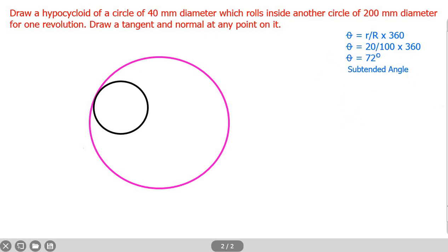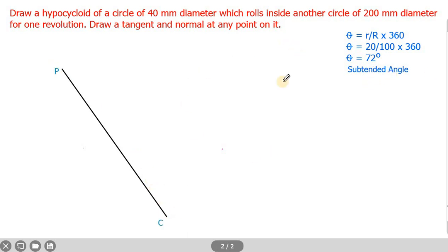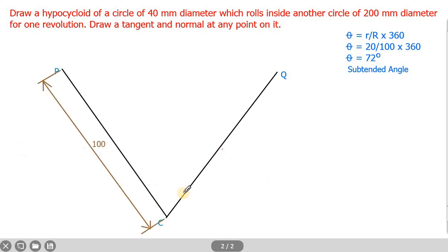To start the diagram, first draw a slanting line of capital R, that is 100 mm. Mark one end as P and the other as C. Then draw one more line at an angle of 72 degrees with PC, and this line should also be 100 mm. Name the end of this line as Q. Mark the dimension as 100 mm and mark the angle as 72 degrees.